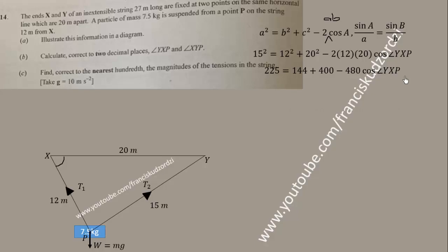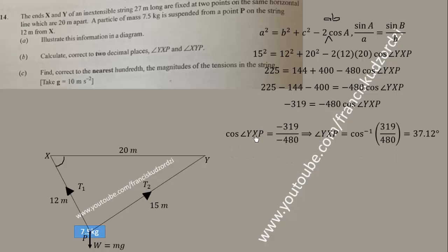We simplify further. When we evaluate on the left we get -319 = -480 cos(∠YXP). Divide through by -480 and simplify. This gives us ∠YXP = cos⁻¹(319/480). When you calculate that correct to two decimal places: 37.12 degrees.